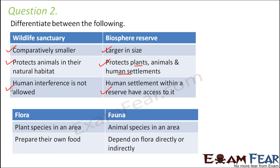Flora refers to the plant species present in a particular area, and fauna is the corresponding term for animal species. Flora — green plants — prepare their own food as they are capable of performing photosynthesis. But fauna — animals — depend on flora, that is the plants, either directly or indirectly.